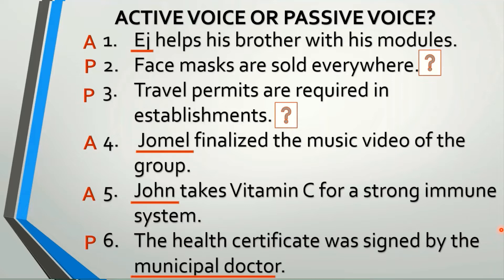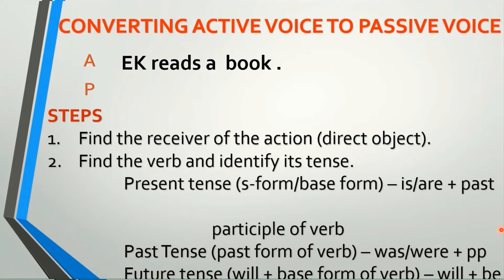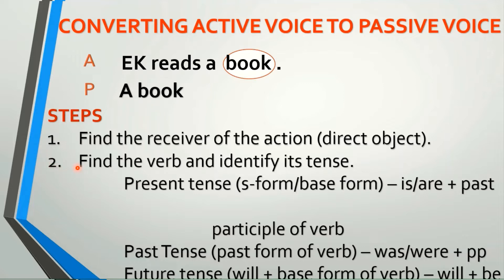I hope the difference between active voice and passive voice is very clear to you. Let's proceed now to converting active voice to passive voice. I am using the same sentence here. Let's see the steps. Number one: find the receiver of the action. Then that receiver of the action will be used as the subject in the sentence using a verb in the passive voice. So, 'a book' — please include the article 'a' — that's the receiver, and in our passive sentence, we are going to use that as the subject.